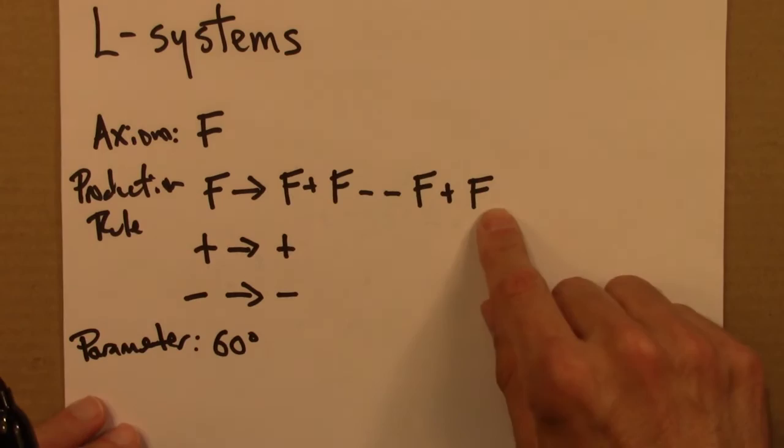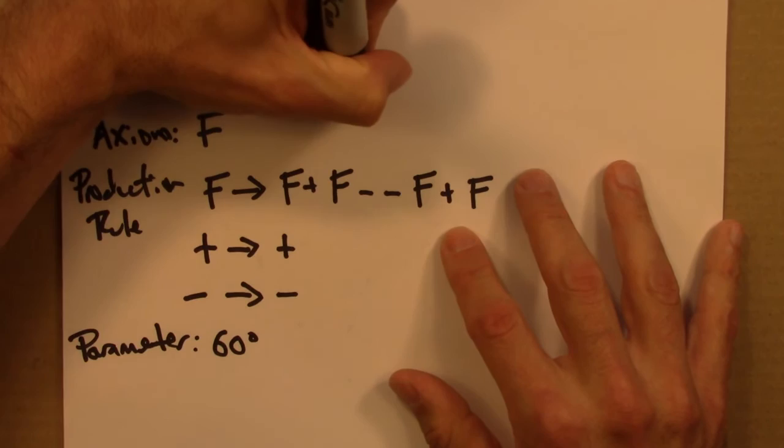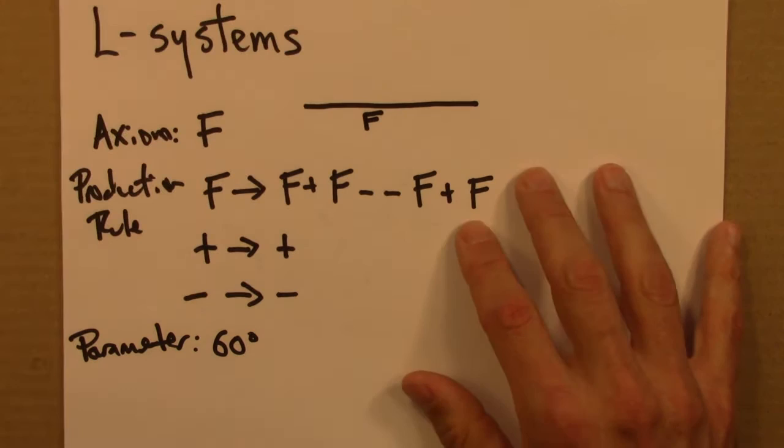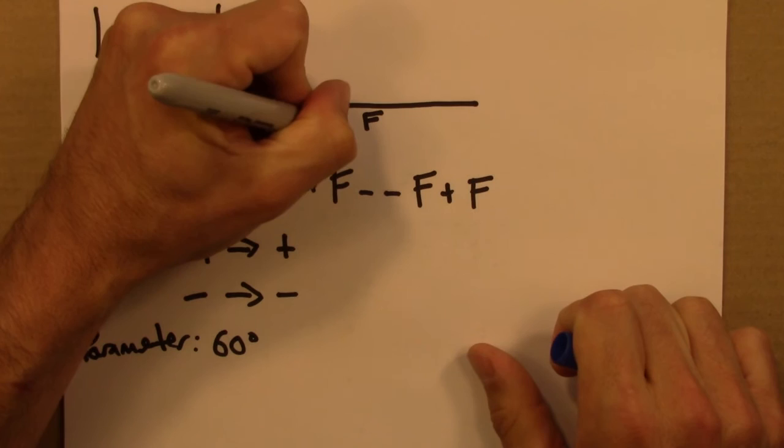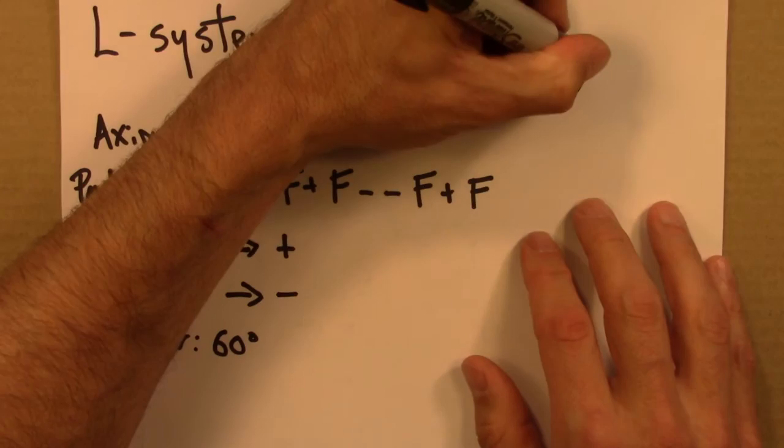Let me try a drawing to illustrate this. We start with our axiom F. This would be N equals zero. And then we replace F with this. And you could probably see this coming, it's this shape again.